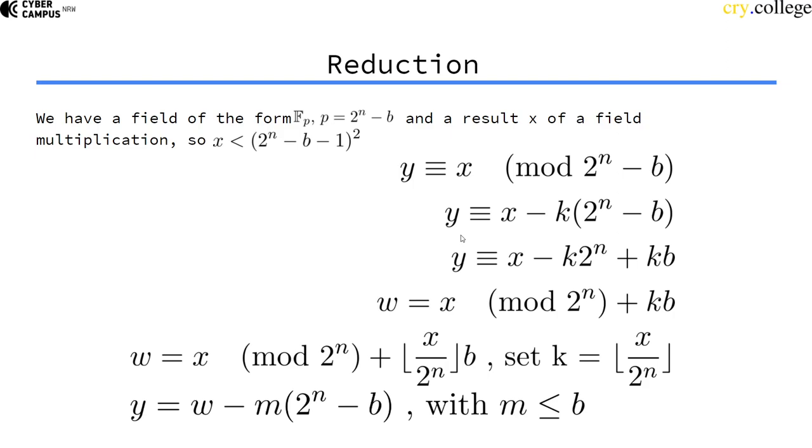And why is that a good thing? Well, taking a number modulo 2^n just means cutting it off. Like looking at the bit representation,